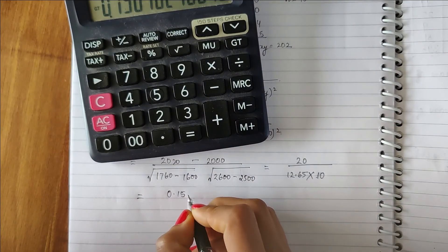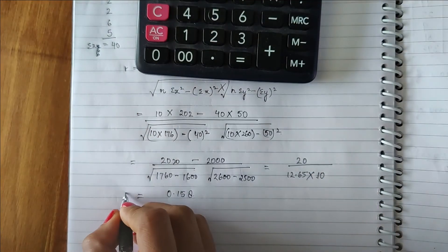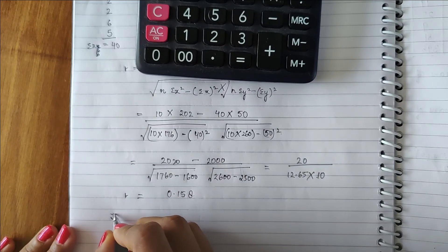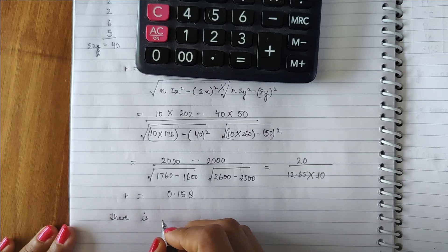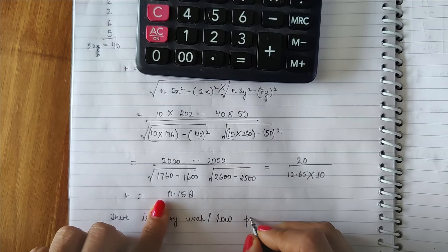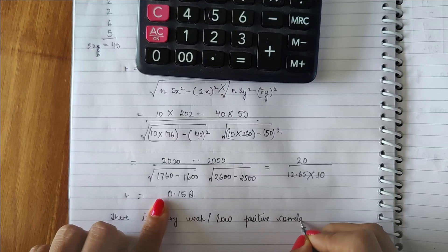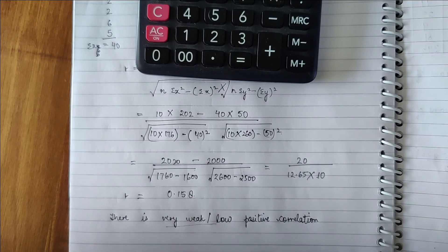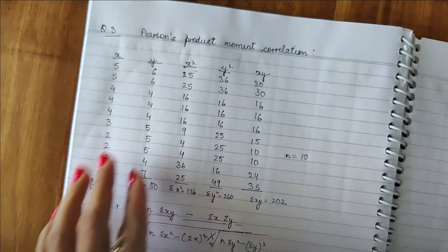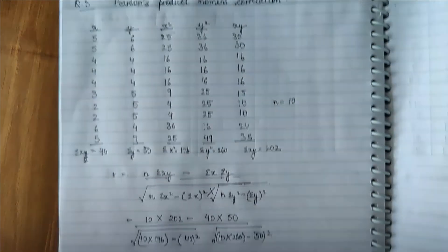So now we can write the statement that there is very weak or low positive correlation between the values of X and Y. If you go to my earlier video where I have explained the Pearson's product moment correlation in detail, you will understand it.